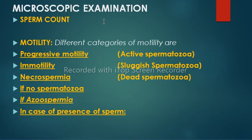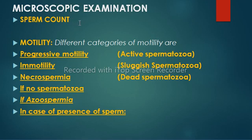In microscopic examination, the first parameter is sperm count. A microscope with a 10x lens should be used for counting. Place a drop of sample into a Markle chamber and count the sperm heads in 10 squares, just like we count TLC. This number represents the concentration of spermatozoa in millions per ml. When the sample is oligozoospermic, count all 10 squares and multiply by 10 to get the concentration of spermatozoa.